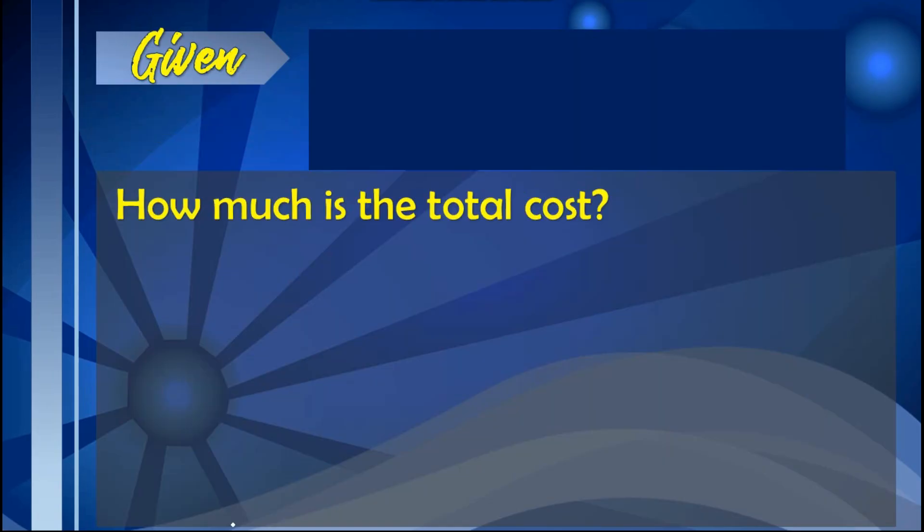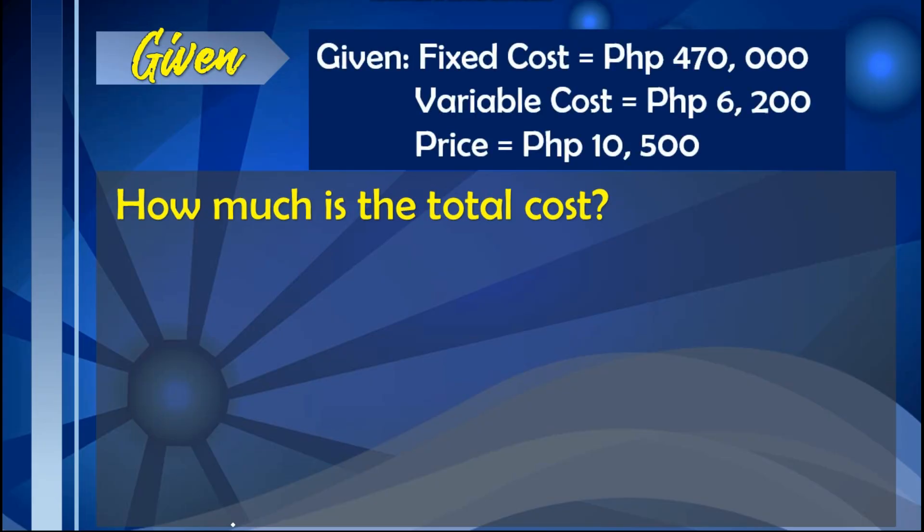Based on the given real-life scenario, these are the following given values: the fixed cost is $470,000, the variable cost is $6,200, and the selling price of the sofa chair is $10,500.